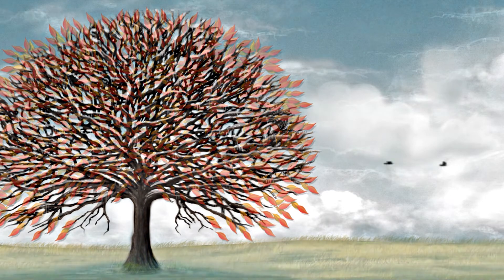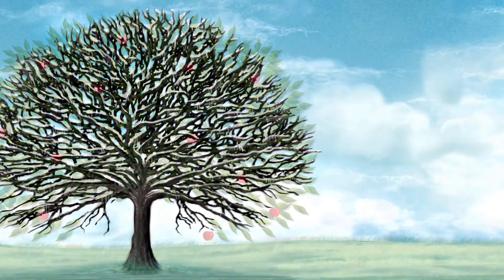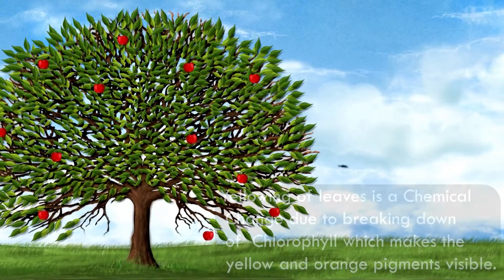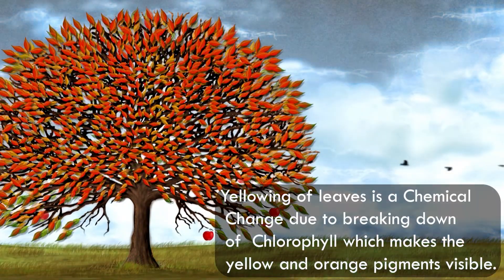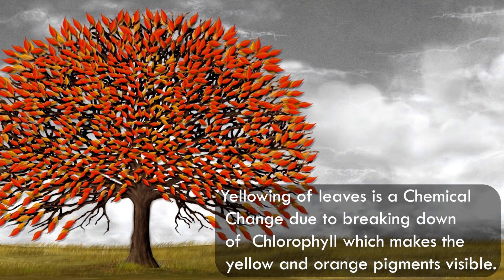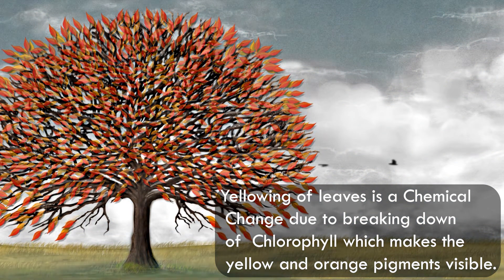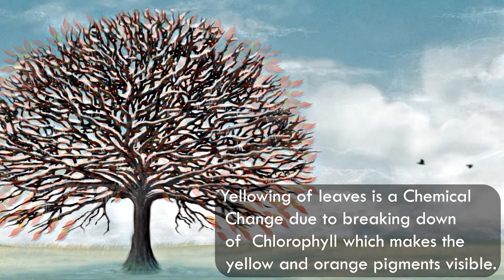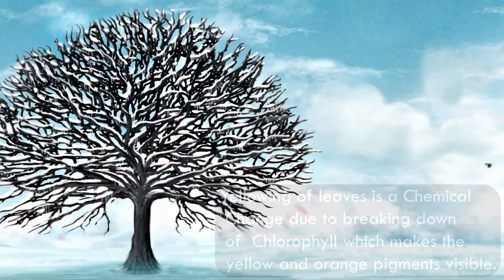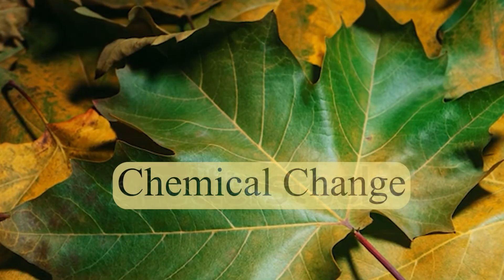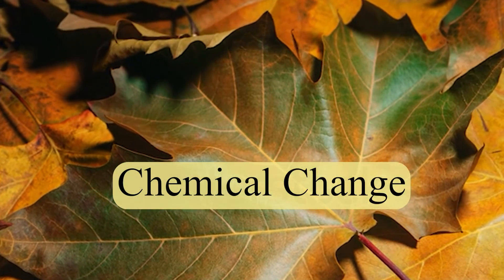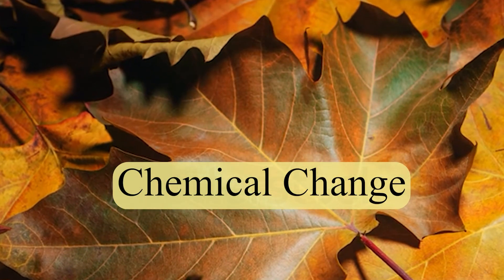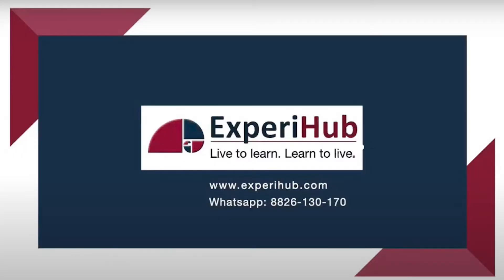So the different colors in leaves are caused by changes in the pigments. When the weather changes, some plants break down all the green pigment. This lets beautiful yellows, oranges, and reds come through in the fall. Hence, when leaves become old, they become yellow and fall — this is termed as a chemical change.